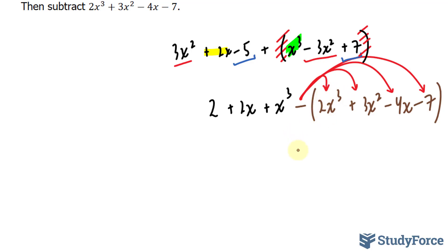And if you do that, all of the terms will have a switch in their sign. So this was initially positive. It will be minus 2x to the power of 3. This was positive as well. Minus 3x squared. This was negative. So it becomes positive 4x. This was negative. It becomes positive 7. This stays the way it is. 2 plus 2x plus x to the power of 3. Let's combine like terms.